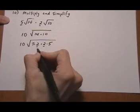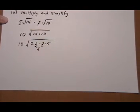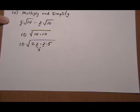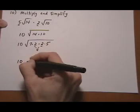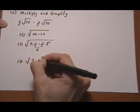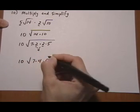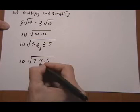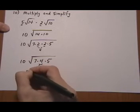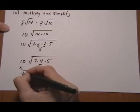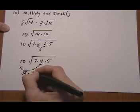I've got 2 times 2. 2 times 2 gives me 4. So, what I'm going to do is go ahead and rewrite that as a 4. And then take out, because root 4 is going to be equal to 2.